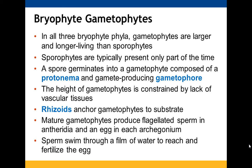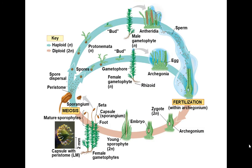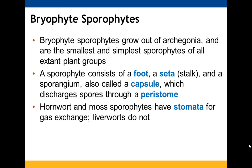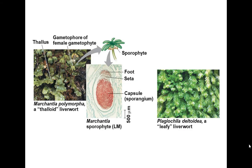The bryophytes are covered in terms of their reproduction cycle including fertilization and meiosis. They are the simplest of the bunch. Some have stomata and others don't.